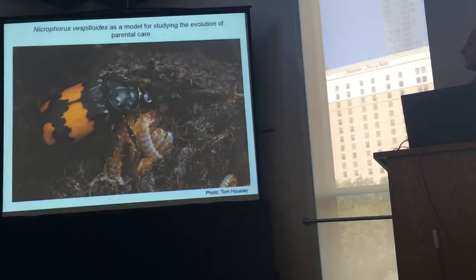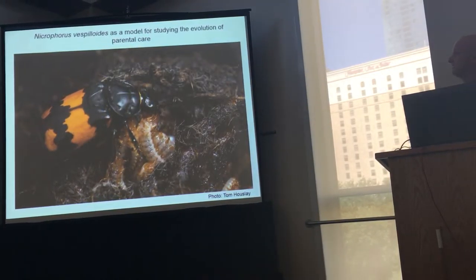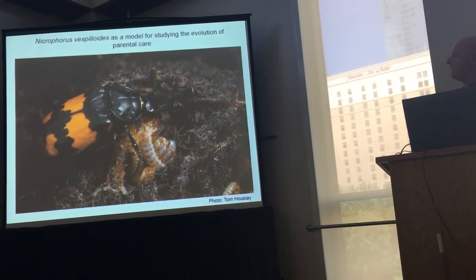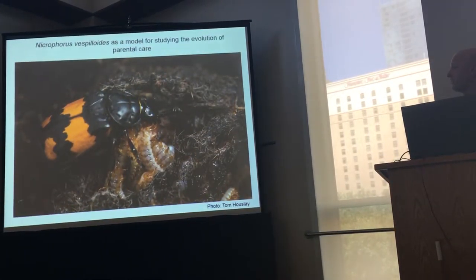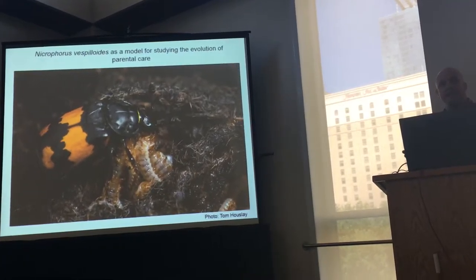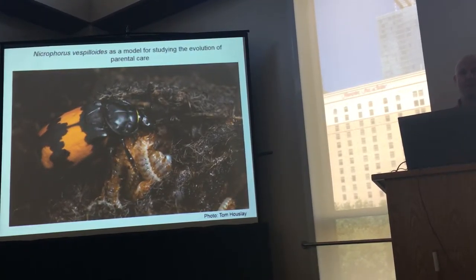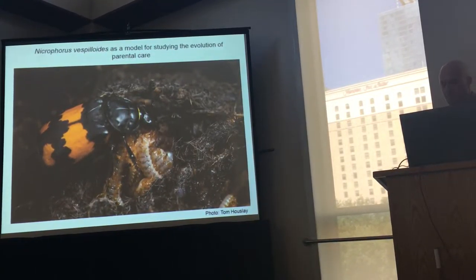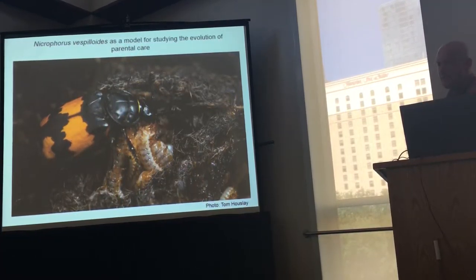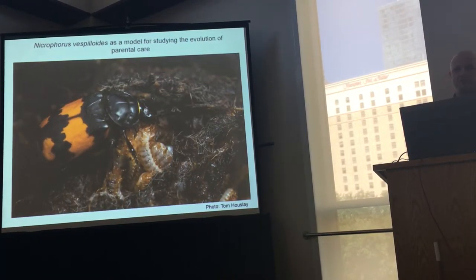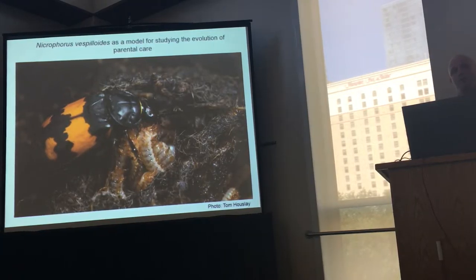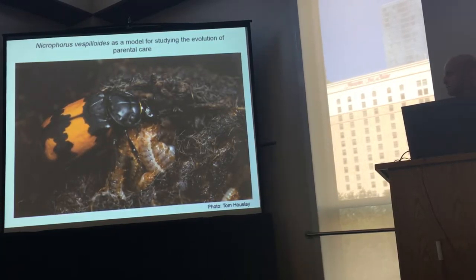We've been doing this in the wonderful species Nicrophorus vespilloides, which has become a model for studying the evolution and genetics of parental care. As Ben talked about earlier, breeding in this species relies on a vertebrate carcass, usually a small mammal or a bird. It consists of two main components: a pre-hatching stage of parental care, and a post-hatching stage of parental care.